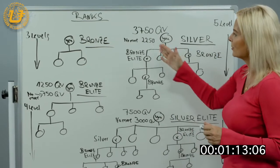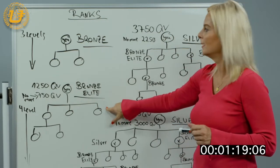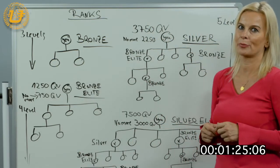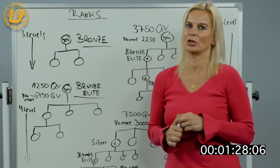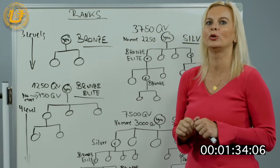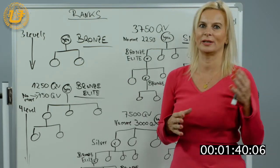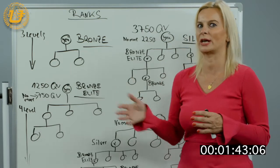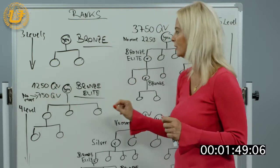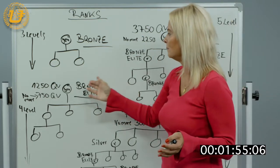The next rank is Bronze Elite. As a Bronze Elite, you have enrolled three people — they are active and enrolled — and one of them must actually be a Bronze. You also have another qualification: you need to have at least 1,250 QV (Qualification Volume). Remember the BV (bonus volume) and QV which counts towards your rank. This QV comes from the different packages that people buy.